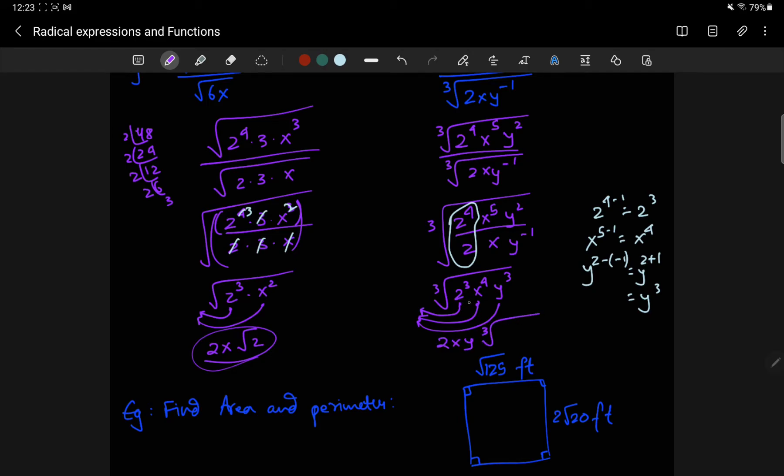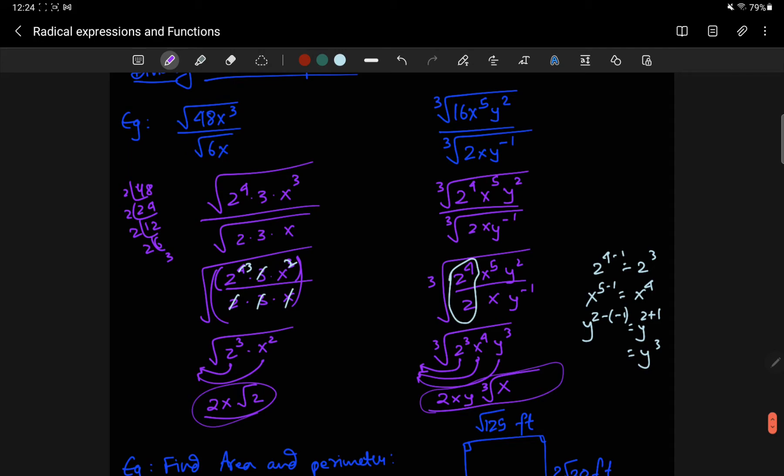So, 2 x y cube root, there's no copies of 2 left inside, and no copies of y, but there's one copy of x. So, what looks pretty messy over here, once you simplify, is actually not very messy.